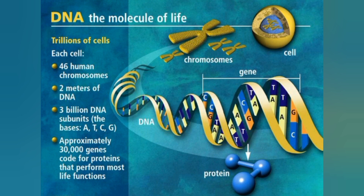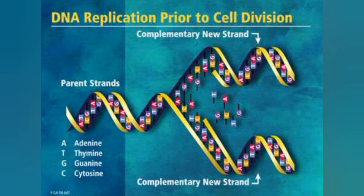These are the DNA molecules that make life. DNA replication occurs prior to cell division. As you can see, the DNA replication process shows that DNA is replicated to produce another copy. This is the parent strand, and this is the complementary new strand.